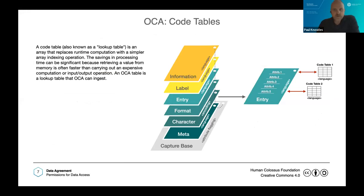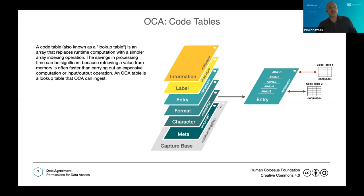One I want to highlight is the entry overlay, because it can point to different objects. For instance, if you have five attributes, attribute one can point to an external code table — also known as a lookup table. It's basically a simple array that replaces runtime computation with a simpler array indexing operation. The savings in processing time can be significant because retrieving a value from memory is often faster than carrying out an expensive computation or I/O operation. An OCA table is a lookup table that OCA can ingest.